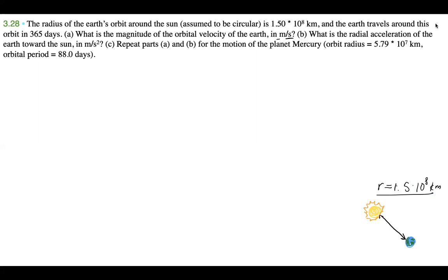So we said that the radius is 1.5 times 10 to the 8 kilometers. Let me actually read the question now. The radius of the Earth's orbit around the Sun, assumed to be circular, is 1.5 times 10 to the 8 kilometers, and the Earth travels around this orbit in 365 days. Part A: what is the magnitude of the orbital velocity of the Earth in meters per second? Part B: what is the radial acceleration of the Earth toward the Sun in meters per second squared? Part C: repeat parts A and B for the motion of the planet Mercury, whose orbit radius is 5.79 times 10 to the 7 kilometers and orbital period is 88.0 days.